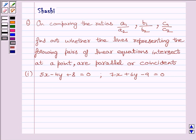The equations are 5x minus 4y plus 8 equals 0 and 7x plus 6y minus 9 equals 0.